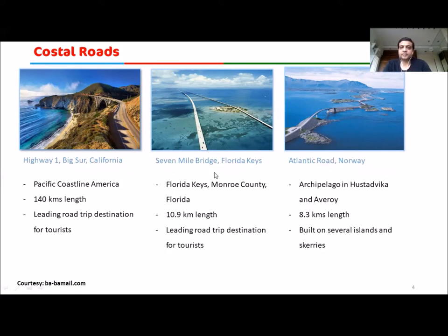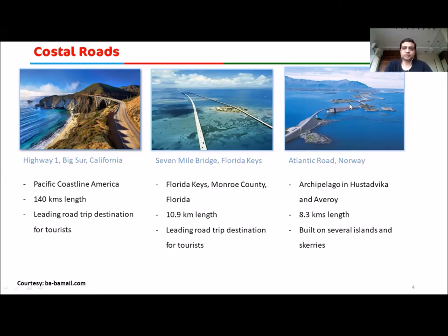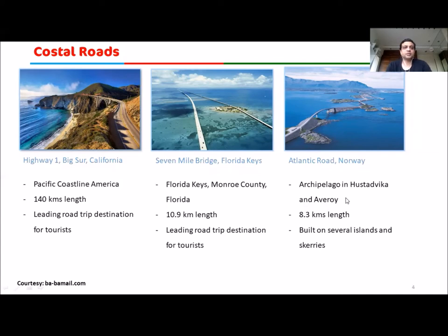There is also a very famous bridge that runs over a stretch of ocean — 18.9 kilometers in length and a renowned tourist destination. Then there is the Atlantic Road in Norway, 8.3 kilometers in length, built on several islands and skerries, connected using this road. Many such coastal roads are beautifully built across countries, serving as tourist destinations, bringing revenue, and making transportation fast.